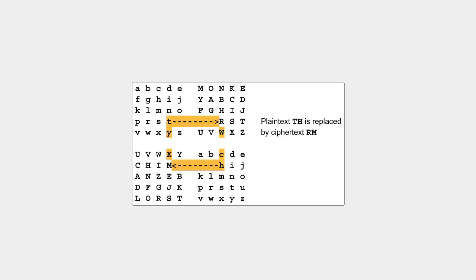Enciphering uses the familiar rectangular scheme. You locate the two plaintext letters in the standard alphabets and replace them with the letters at the opposite corners of the rectangle, like this.